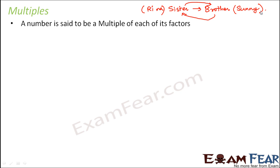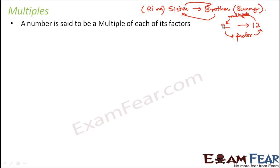In a similar way, if 2 is a factor of 12, that means 12 is a multiple of 2. So if we say that 2 is a factor of 12, then we must say that 12 is a multiple of 2. A number is always a multiple of each of its factors.